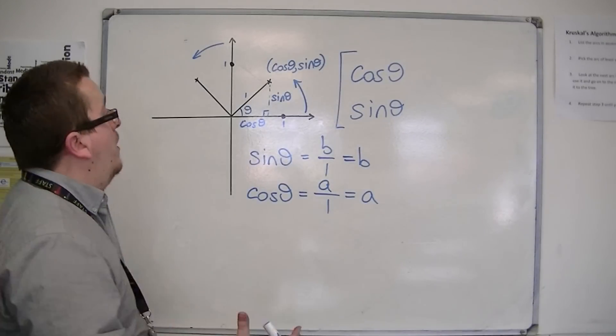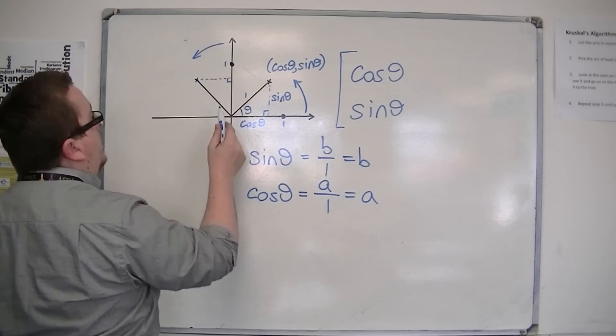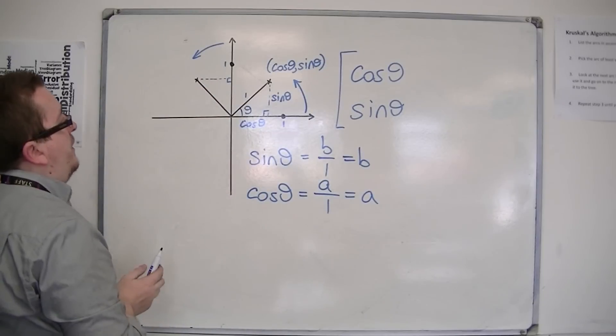Now in exactly the same way, I can consider this right angle triangle for 0, 1 being rotated around to this point.